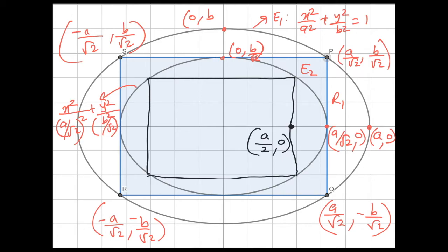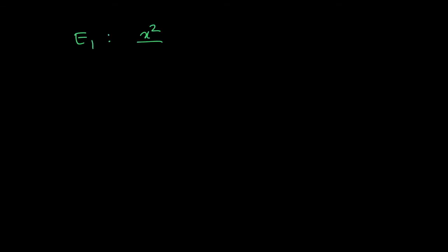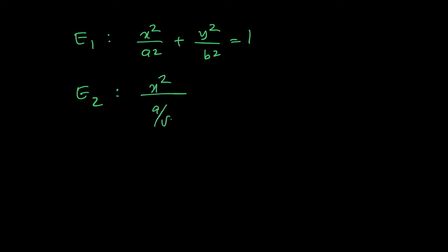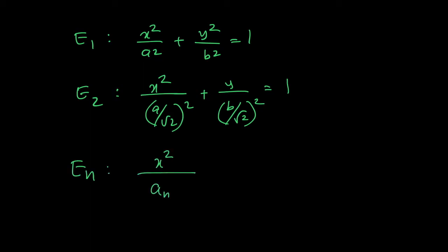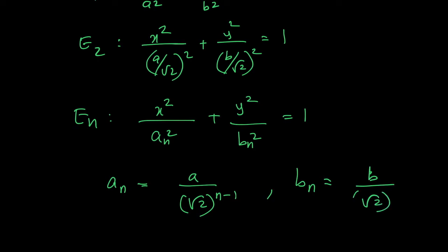The general pattern is: E1 is x²/a² + y²/b² = 1; E2 is x²/(a/√2)² + y²/(b/√2)² = 1; and in general, En has semi-axes an = a/(√2)^(n−1) and bn = b/(√2)^(n−1), where a = 3 and b = 2.